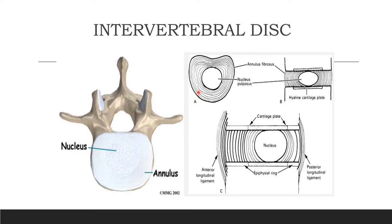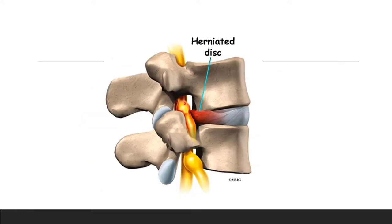In vertebral disc anatomy, there is an inner nucleus pulposus, which is a soft gel-like structure, and an outer annulus fibrosus, which is a fibrous structure. The nucleus pulposus contains more proteoglycans and has a greater water-binding capacity. Here you can see a herniated disc impinging the nerve root, which will produce radiculopathy.